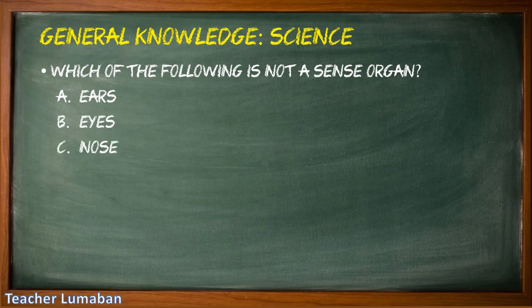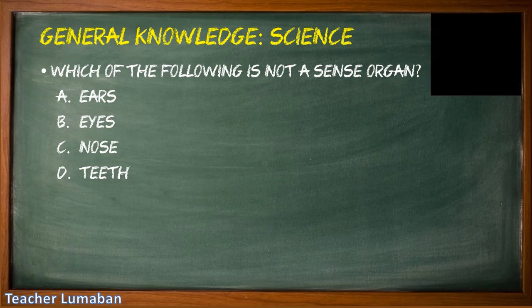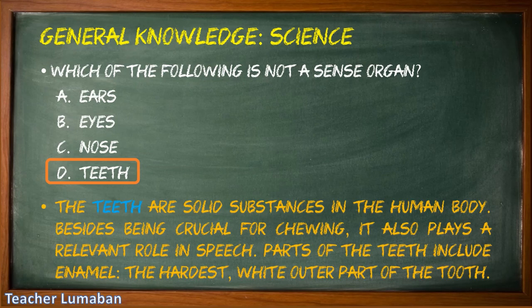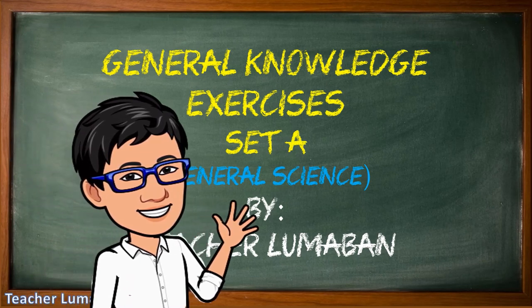Which of the following is NOT a sense organ? Letter A: ears, Letter B: eyes, Letter C: nose, Letter D: teeth. The correct answer is Letter D: teeth. Teeth are not a sense organ. Teeth are solid substances in the human body; besides being crucial for chewing, they also play a relevant role in speech. Parts of the teeth include enamel, the hardest white outer part of the tooth.